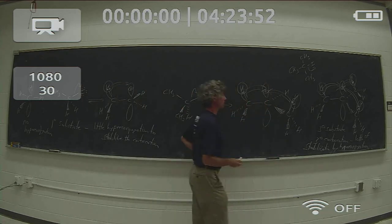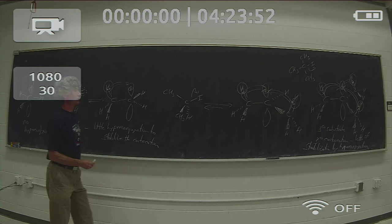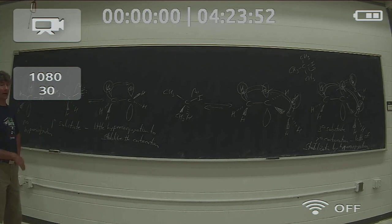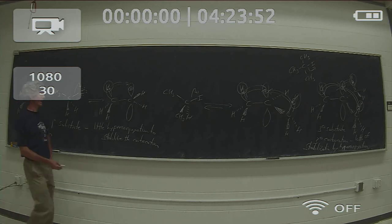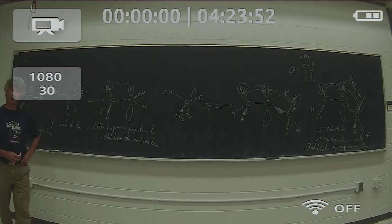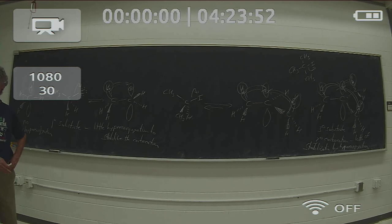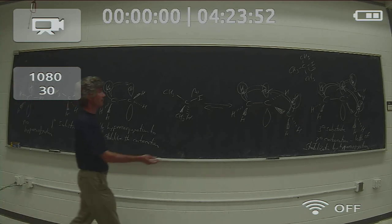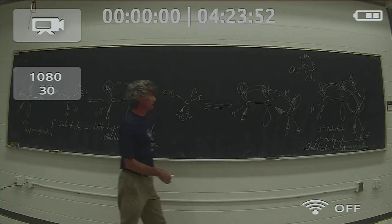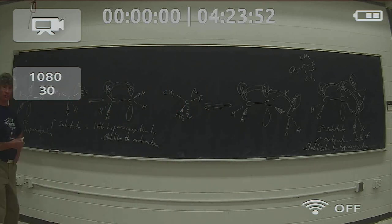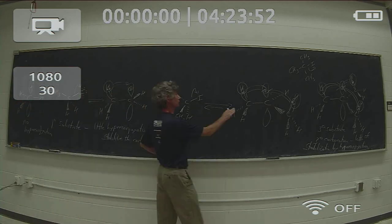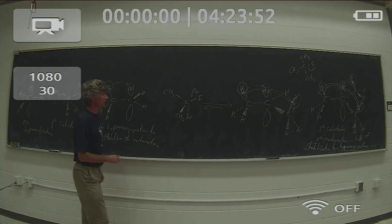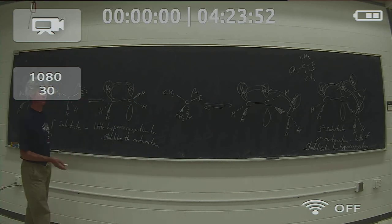Three hyperconjugative interactions means pretty much exclusively SN1 — a very stable carbocation and steric hindrance is really slowing down the SN2 reaction. Only one hyperconjugative interaction means not a very stable carbocation, and since there's no steric hindrance to approach of the nucleophile, the SN2 reaction rate is quite rapid and the SN1 reaction can't compete. For the secondary substrate, we have a relatively stable carbocation and some steric hindrance, but not so much that it completely shuts down the SN2 reaction. So whether the secondary substrate undergoes SN1 or SN2 is going to depend on other factors beyond just the substrate structure.